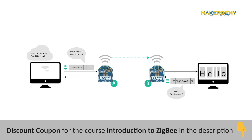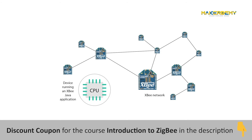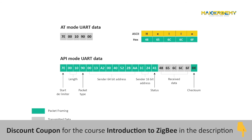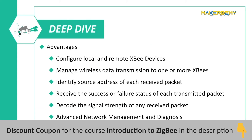API mode provides a structured interface where data is communicated through the serial interface in organized packets and in a determined order. This enables you to establish complex communication between devices without having to define your own protocol. The API mode uses different frames for different purposes — like configuration, communication, and diagnosis. Because of this, we can configure a device without entering the command mode. Also, as the API frame includes the source of the message, it is easy to identify where the data is coming from.